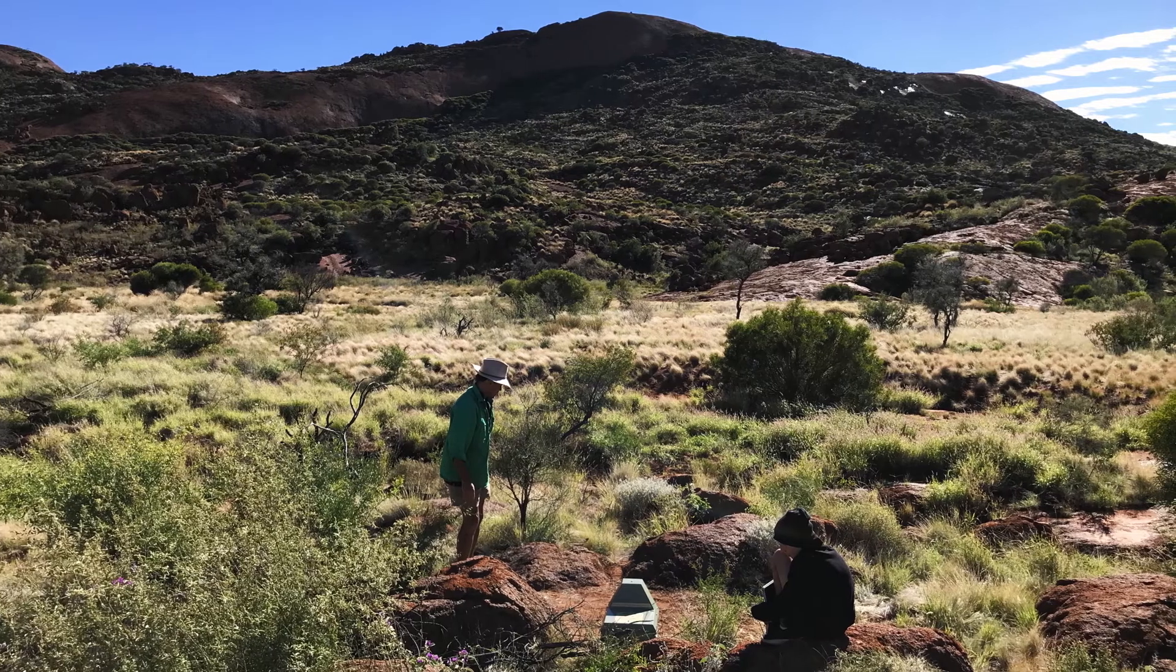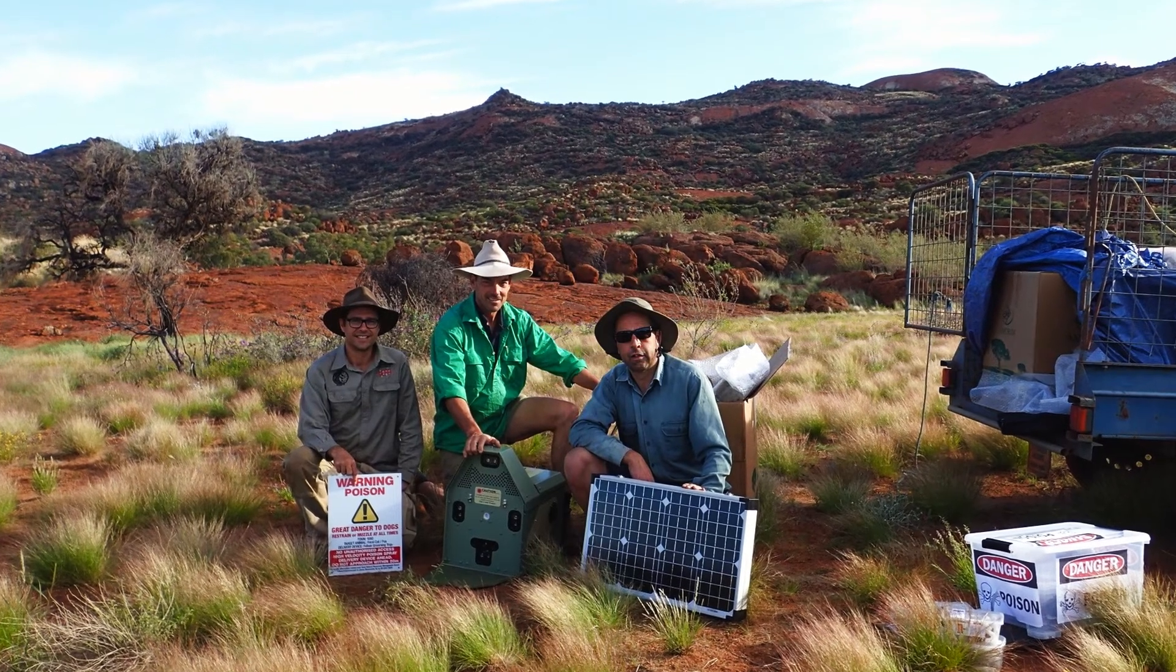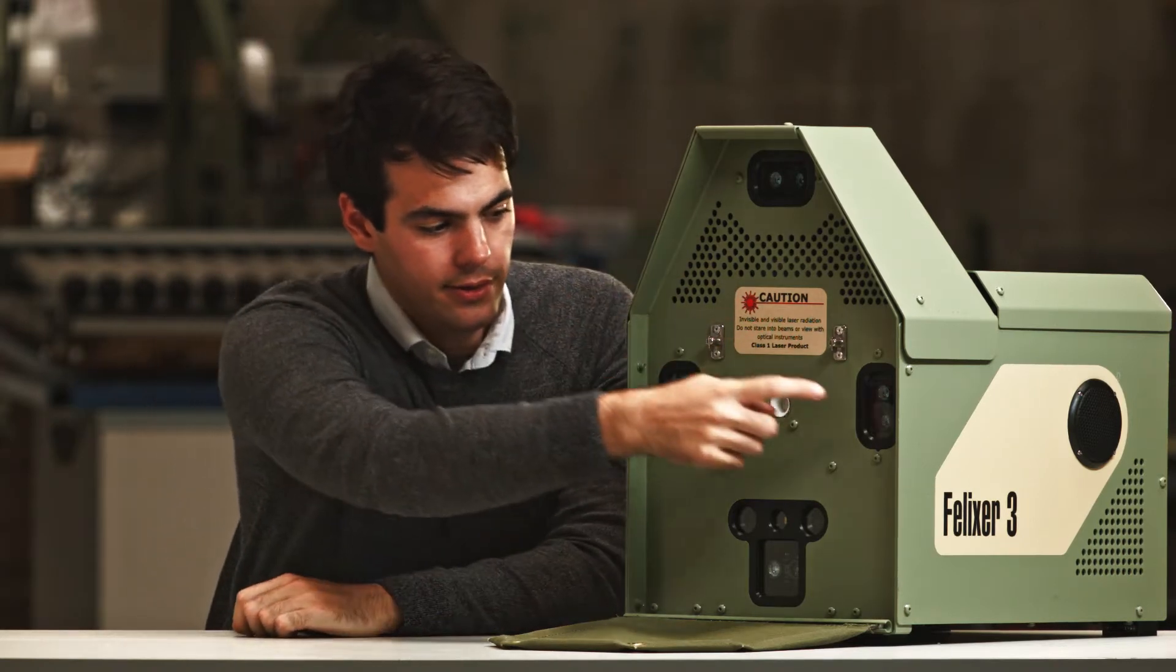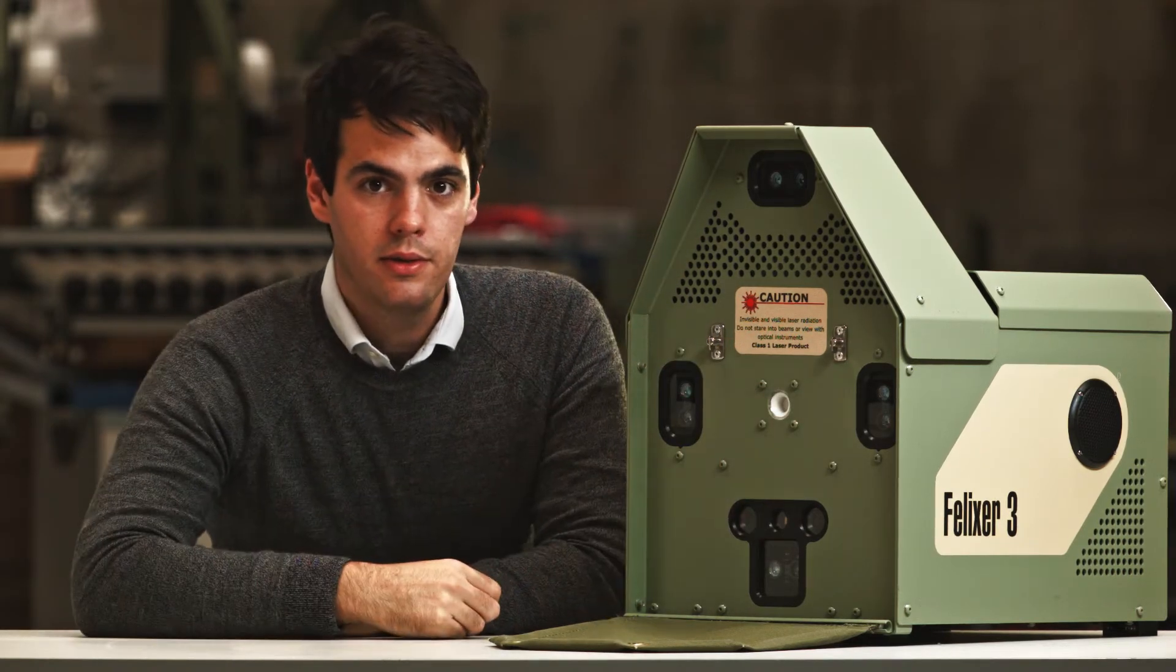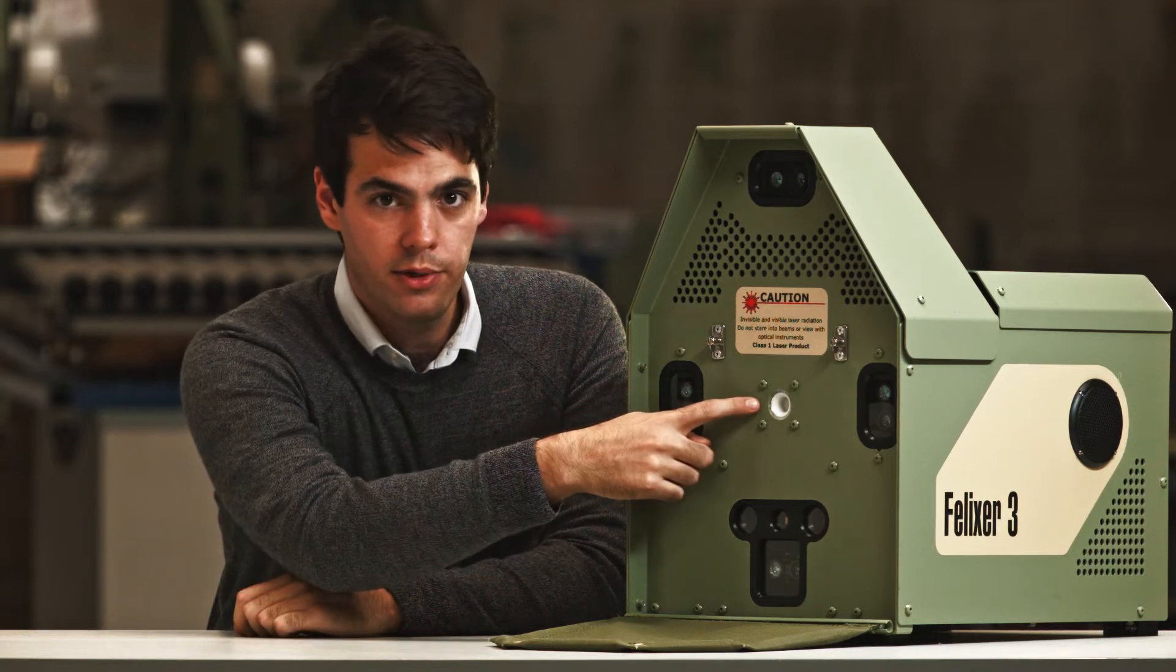The Felixer came to us as a concept to reduce the feral cat population in national parks. We use four sensors to detect target animals, in particular cats, and our gel squirts out from here.